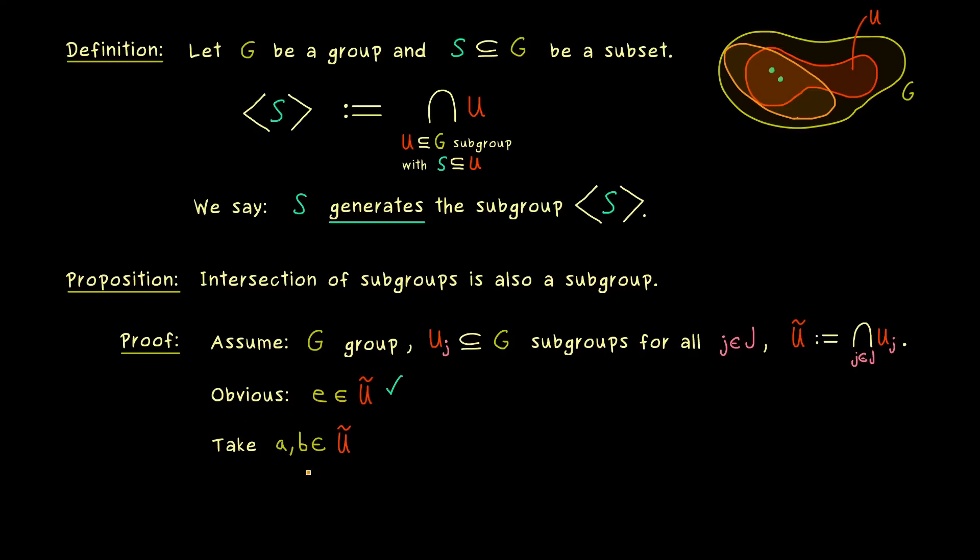And now as always the only thing we have to show is that we cannot leave the subset U tilde with the group operation and the inverse operation. However also that follows immediately from the intersection because we know we cannot leave the single sets UJ. But by the definition of the intersection we know that we lie in all of the UJs. Therefore inside each UJ we can already use the fact that we have a subgroup there. This means A connected with B with the group operation cannot leave UJ. And again this holds no matter which lowercase j we consider.